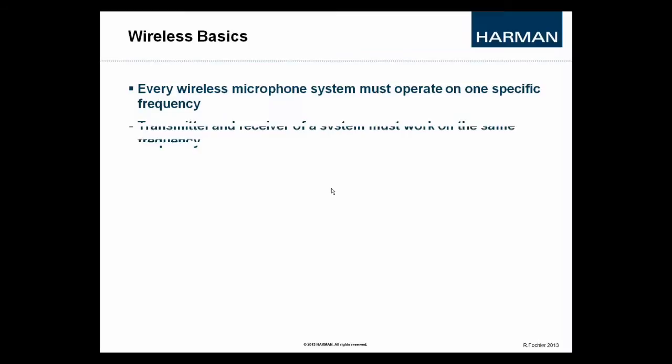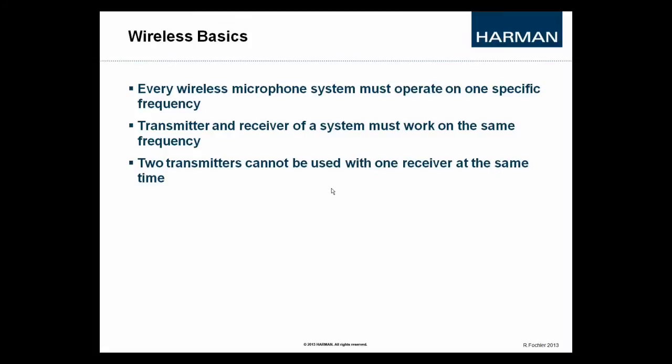Transmitter and the receiver of a system must work on the same frequency. Otherwise, they are not able to communicate. Two transmitters cannot be used with one receiver at the same time. Two identical radio channels in the same environment are not able to coexist. They would interfere with each other.